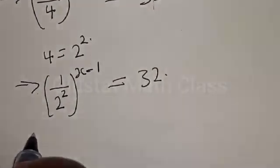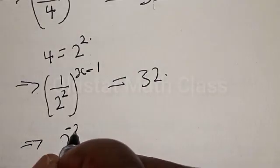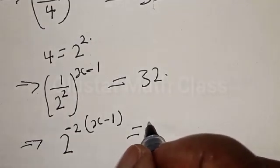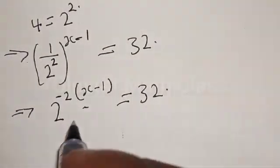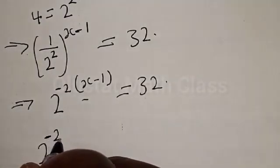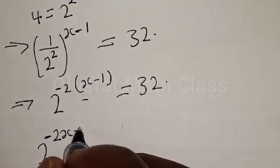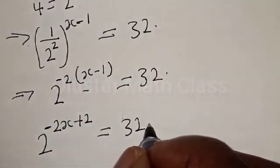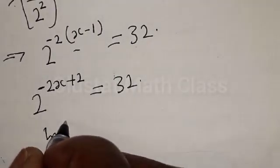This can be rewritten as 2 raised to the power minus 2 into s minus 1, equal to 32. Opening the brackets, we have 2 raised to the power minus 2s, then minus 2 times minus 1 gives plus 2, so the exponent is minus 2s plus 2, equal to 32.